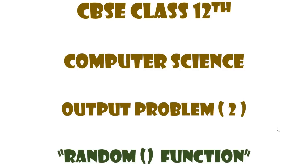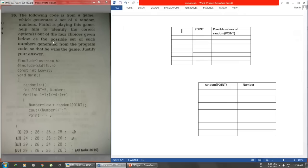Welcome to Bark Tech. In this video I will be solving a question based on the random function — finding the output according to the random function given to us. The question is taken from the Arihanth book, which has questions from last year's question papers. The question says: find the output. This is a game that will generate four random numbers, and we have to find which of the following options can be a possible set of numbers generated.